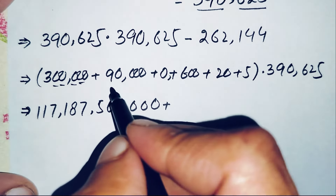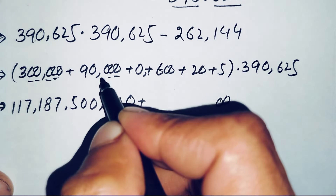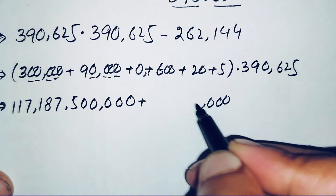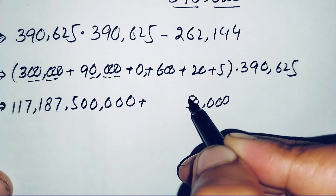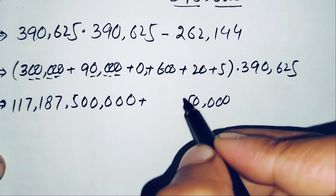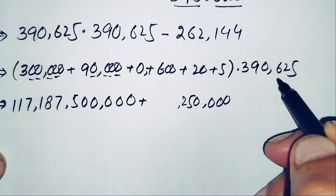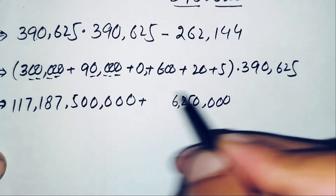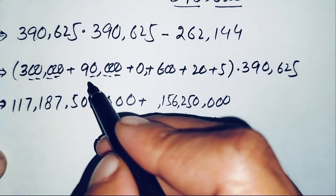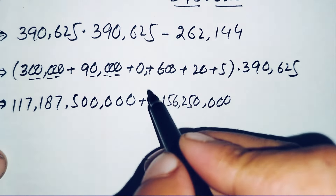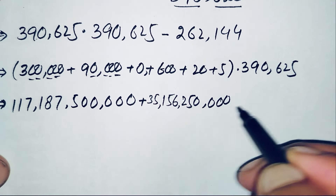Multiplying 390,625 by 90,000: 9×5=45 (write 5, carry 4), 9×2=18 plus 4 is 22 (write 2, carry 2), 9×6=54 plus 2 is 56 (write 6, carry 5), 9×0=0, 9×9=81 (write 1, carry 8), 9×3=27 plus 8 is 35. This gives 35,156,250,000.